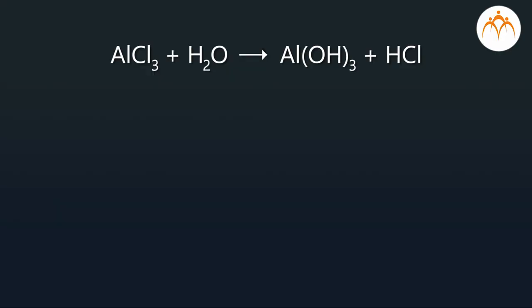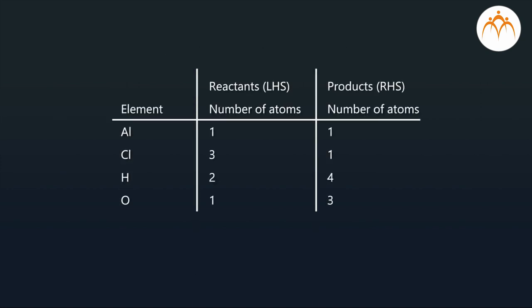AlCl3 plus H2O gives Al(OH)3 plus HCl. In this reaction, the total number of elements on both sides are unequal, so the reaction is unbalanced.